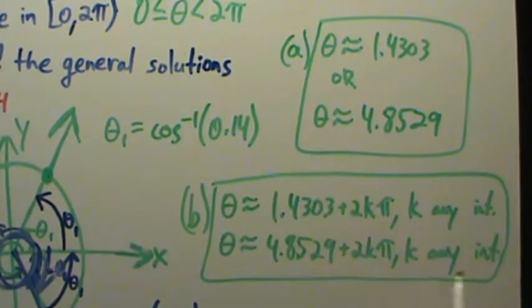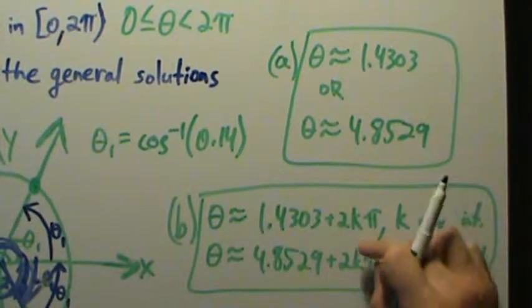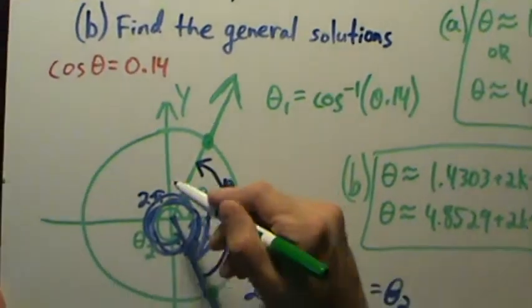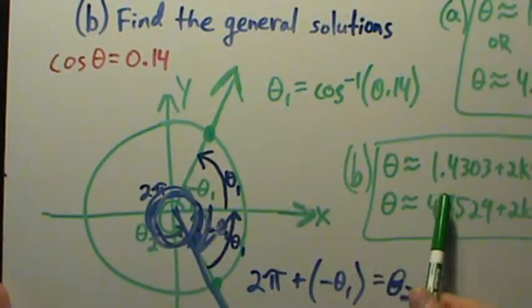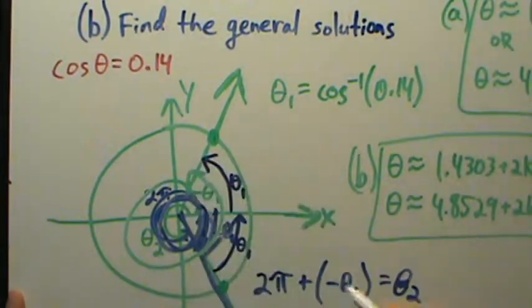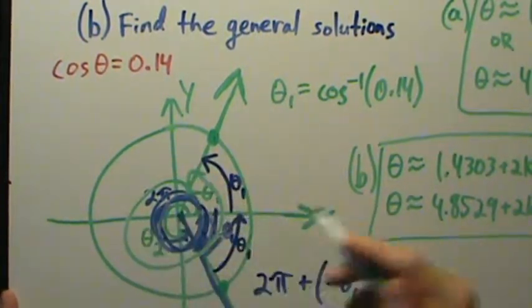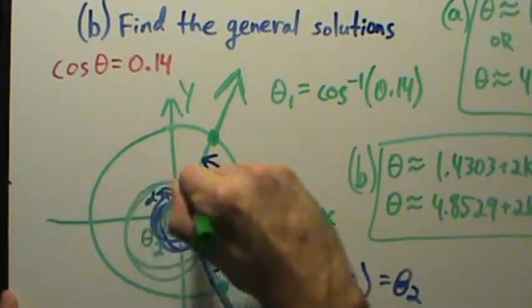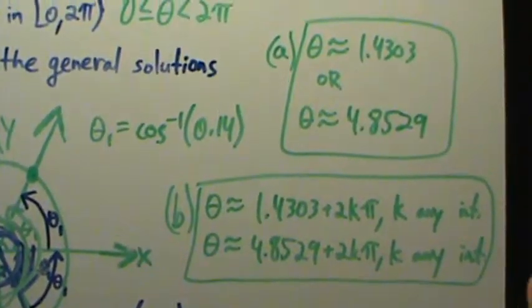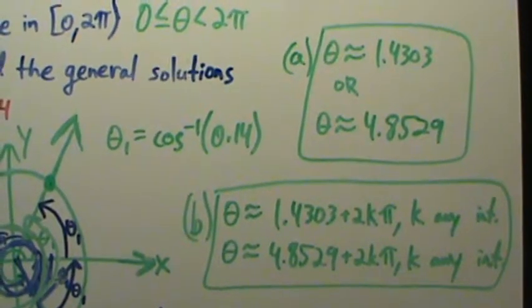So again, just take your answers for part A, the specific solutions, and then add 2k pi, where the k represents how many times you go around and around. So if k is 1, then 1.4303 plus 2 pi would be just around once like that. Okay. If k is 2, go around a second time. If k is negative 1, go around in the negative direction, the clockwise direction, and so on and so forth. So these are the answers here, and that's it for example 4 of solving trig equations.